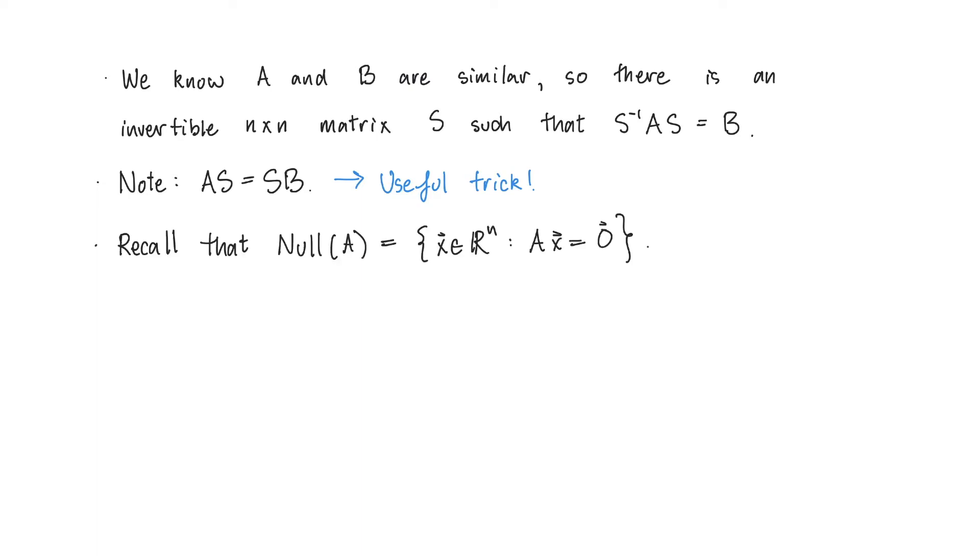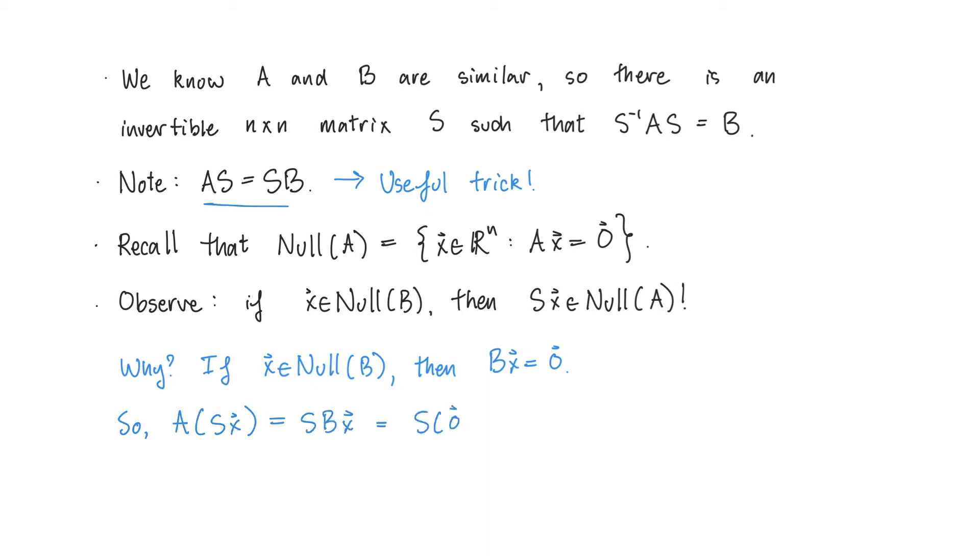We want to understand the null spaces of A and B. Recall that the null space of A is just a set of all vectors X such that A times X is equal to 0. Now I want to note the following. If X is in the null space of B, then S times X is in the null space of A. Why is this? Well, if X is in the null space of B, then B times X is equal to 0. But then A times S times X is equal to S times B times X, by the above note, which is equal to S times 0, which is 0.